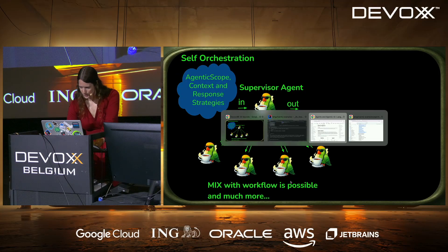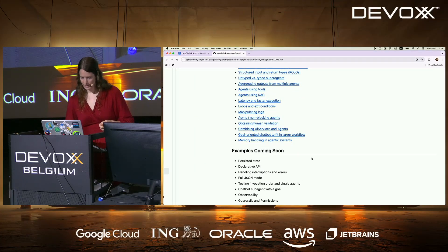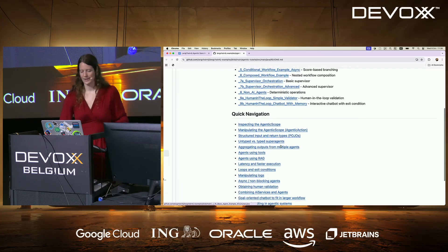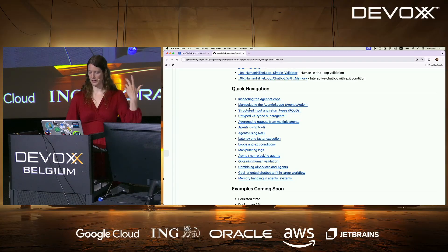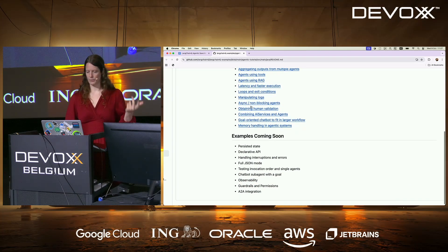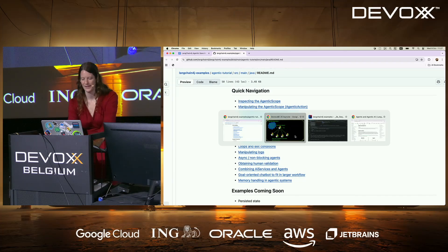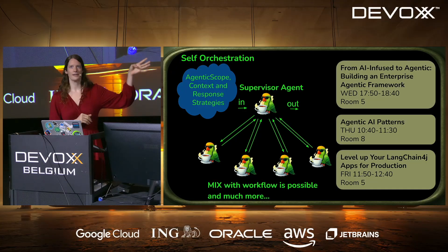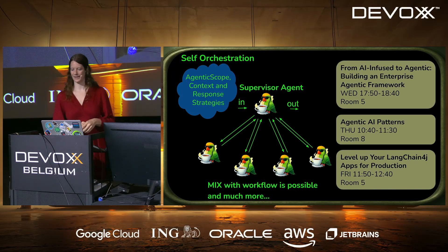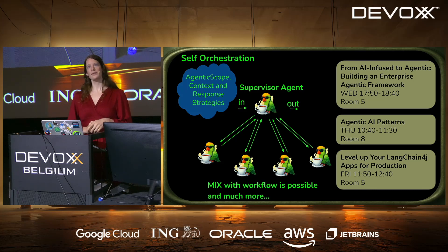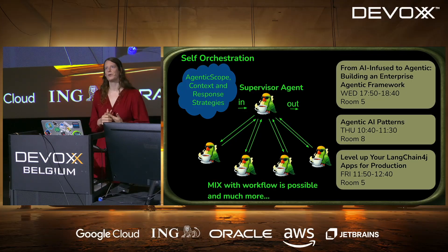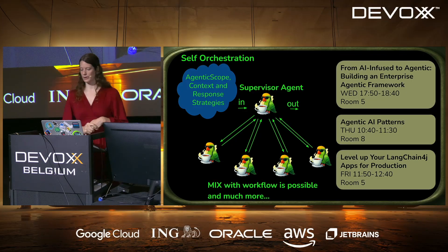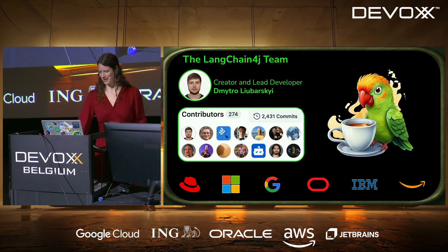I want to point you to our example repository, which has the full tutorial plus quick navigation to topics like manipulating the agentic scope, human validation, async agents, guardrails, and agent-to-agent integration. There are also three recommended talks: tonight, Mario Fusco and colleagues on building the agentic framework; Thursday, using AI agentic patterns; and Friday, my talk on when to use agentic approaches and preparing your LangChain4j app for production.